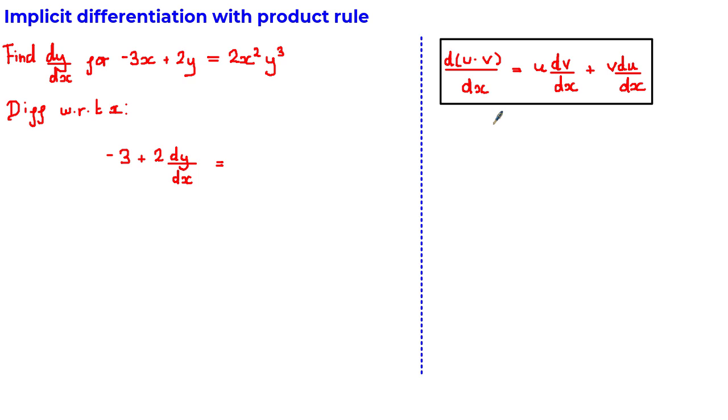Let's do this by first of all writing out our formula for the product rule, which tells us that the derivative of product of functions U and V with respect to X is equal to U dV over dx plus V du over dx. Let's first let u be equal to 2x squared and V be equal to y cubed.